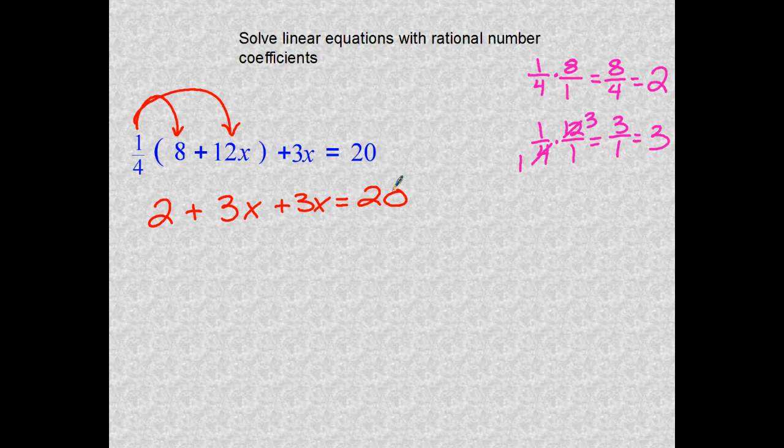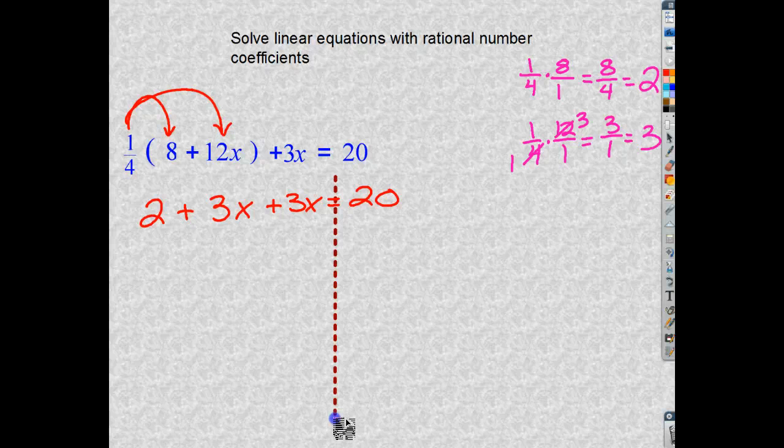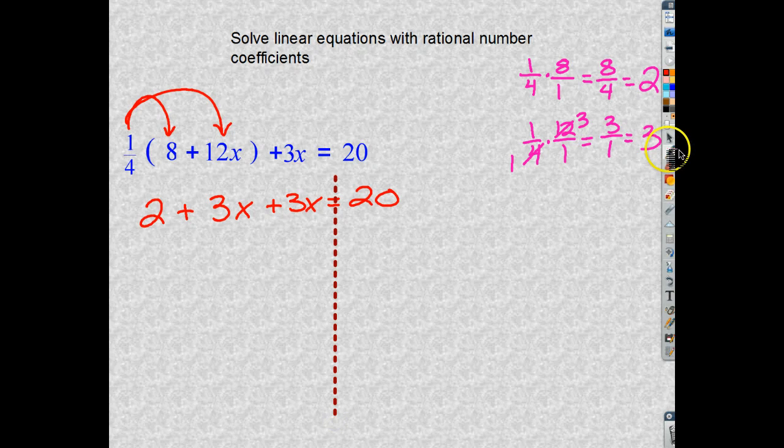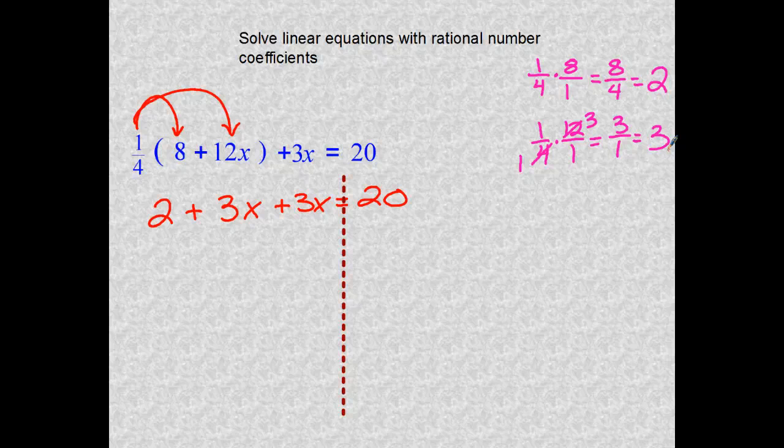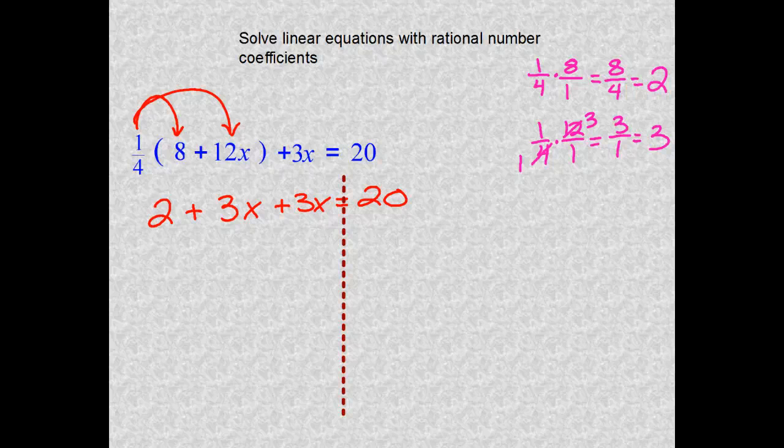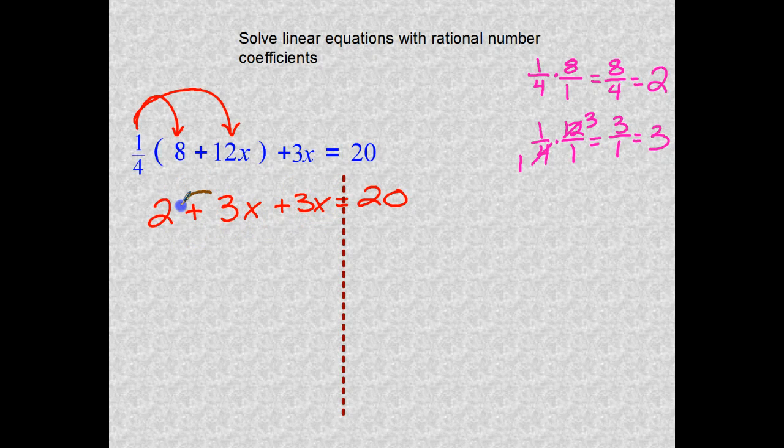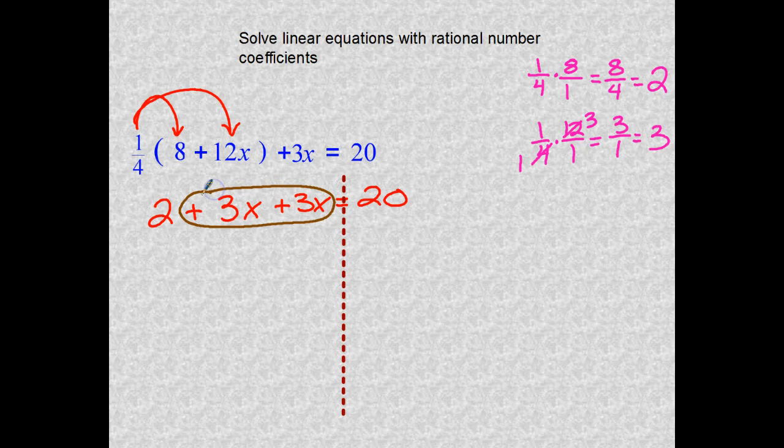Now take a look at the left side of the wall. Here comes my wall. Is there anything that I can combine on the left side before I start moving things from side to side? Look for your like terms. The like terms that I see are the X's. I see that I have a positive three X and a positive three X, and when I put those two terms together I'm going to get a positive six X. So two plus six X equals 20.